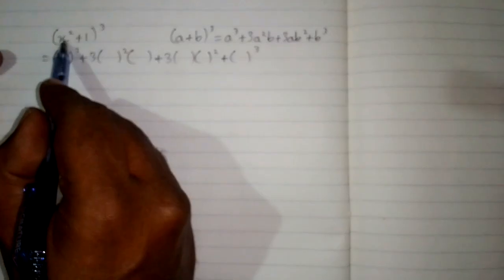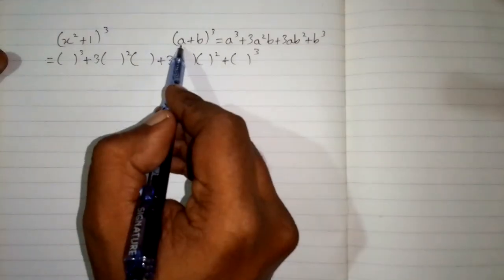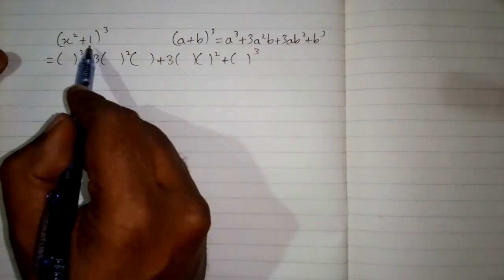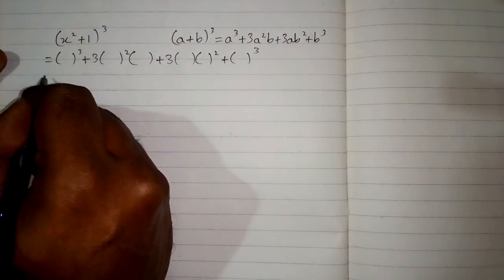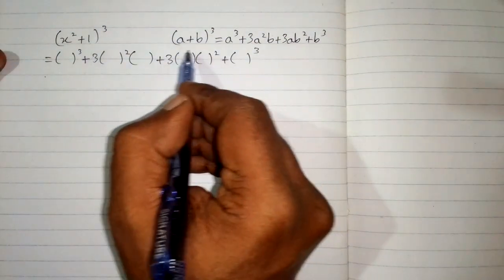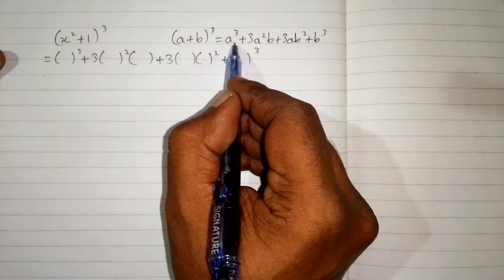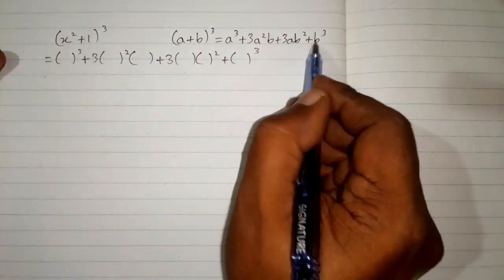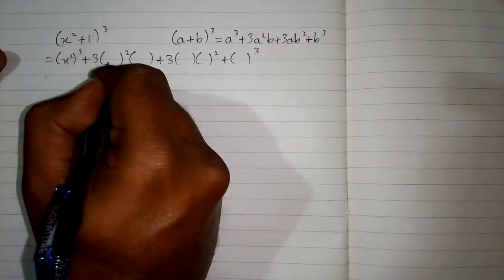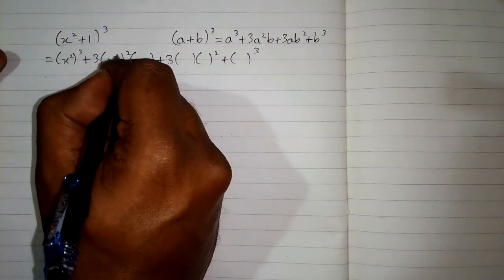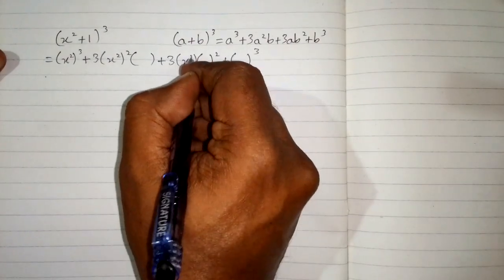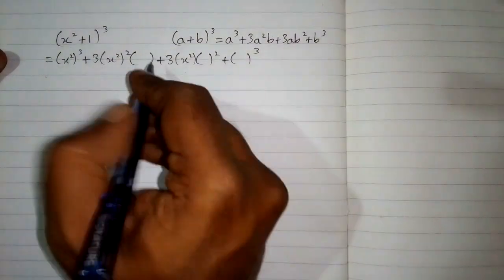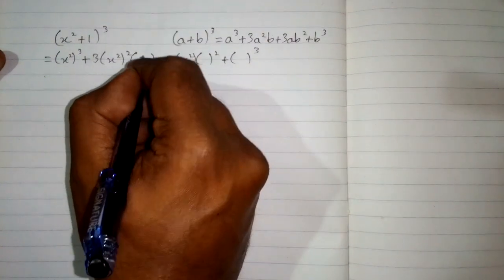We have x square in place of a and 1 in place of b. So we put x square in place of a and write 1 in the respective places of b throughout the formula.